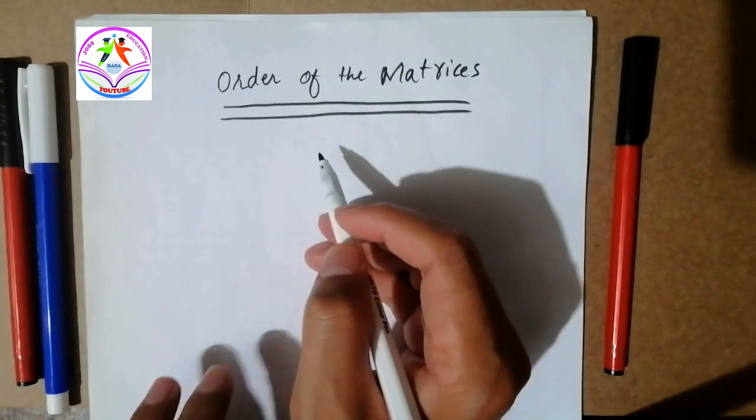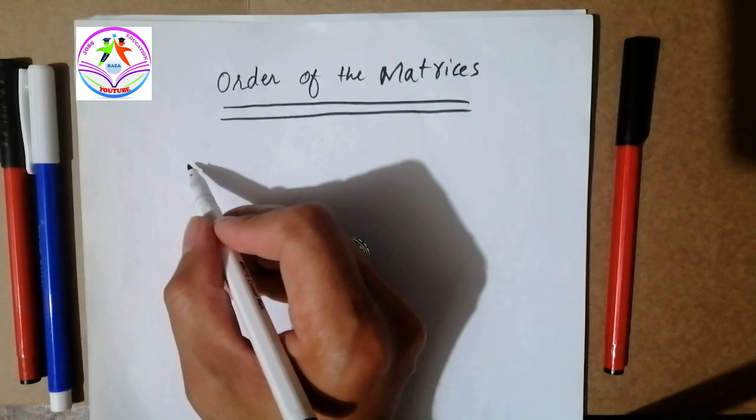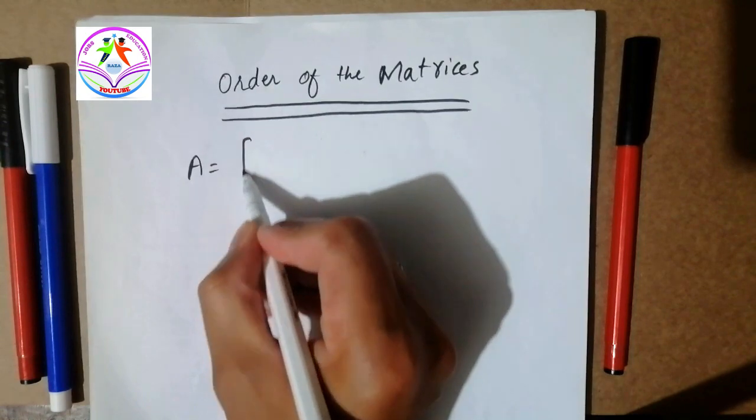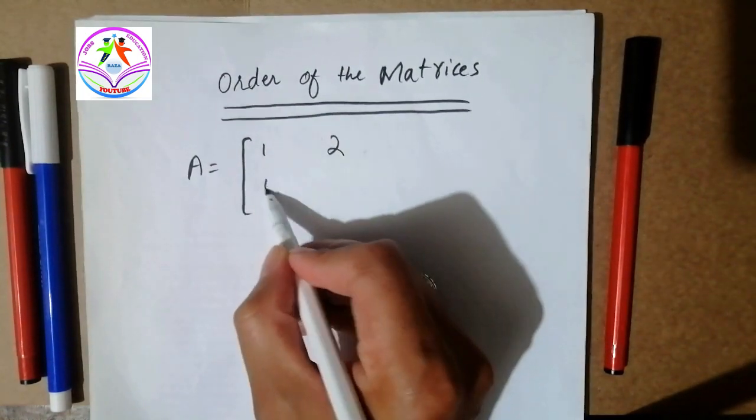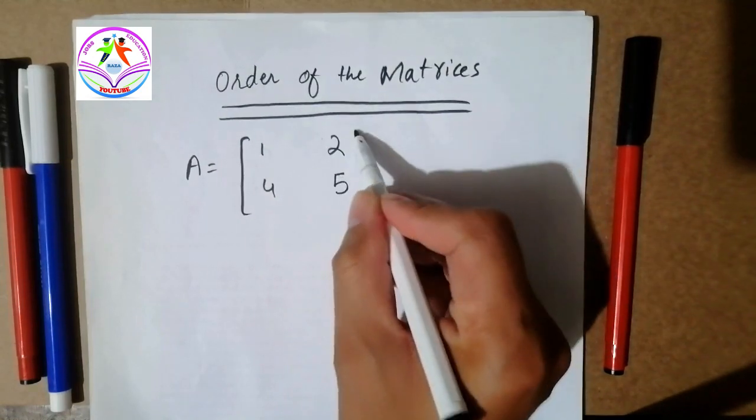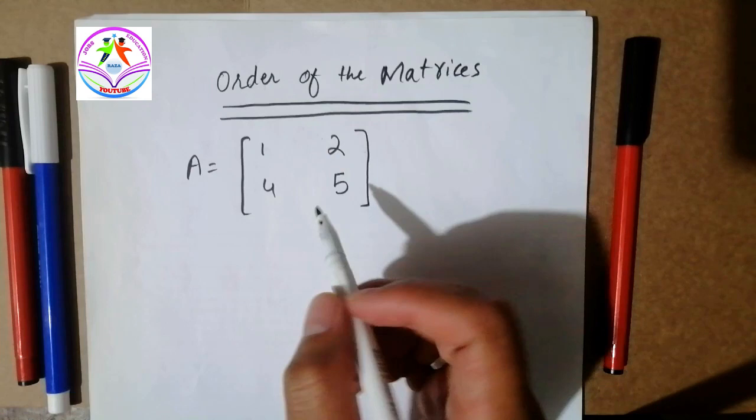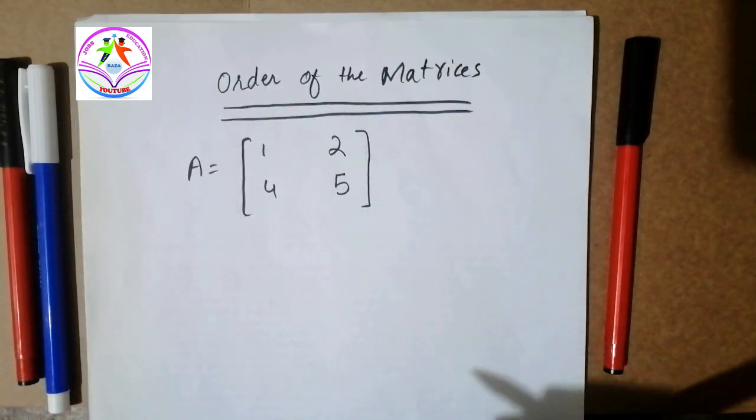For example, let's A is equal to 1, 2, 4, and 5. So this is a matrix. Here you can see the columns and rows are given. So we can say that matrix is a combination of rows and columns.